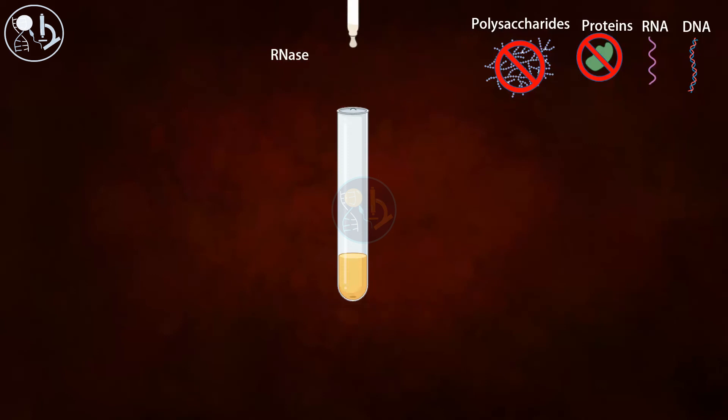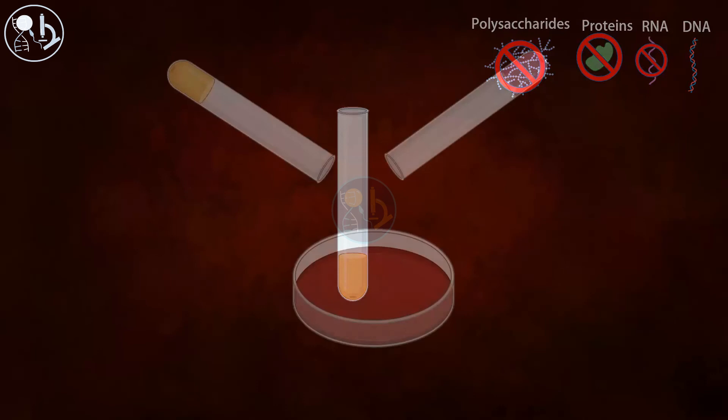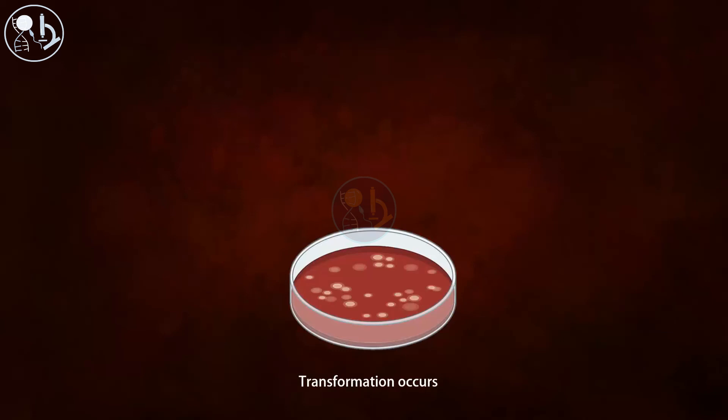Then they used RNase to remove RNA. After repeating the same experiment, they got colonies of 3S again.